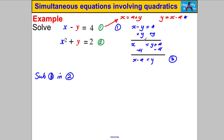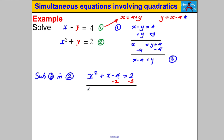Now substitute equation 3 into equation 2. Note: since equation 3 came from equation 1, you must not substitute it back into equation 1. So substituting into equation 2: x squared, and instead of y write x subtract 4, giving x squared add x subtract 4 equals 2. Subtract 2 from both sides and tidy up: x squared add x subtract 6 equals 0. Try to factorise: (x + 3)(x - 2) = 0.